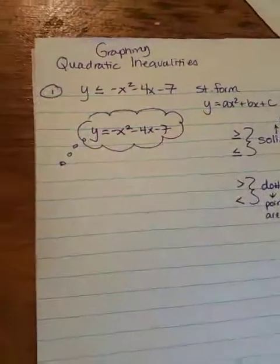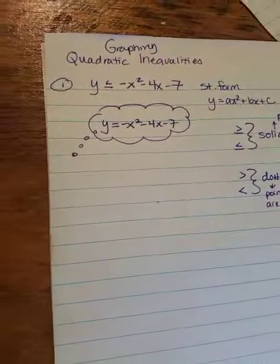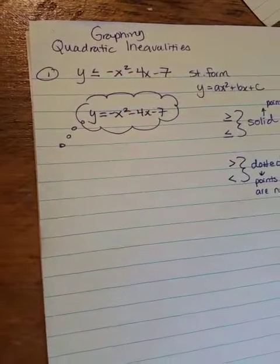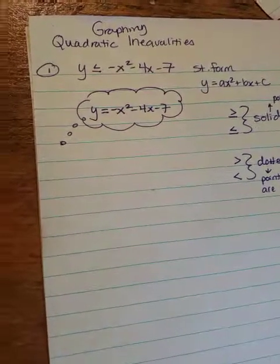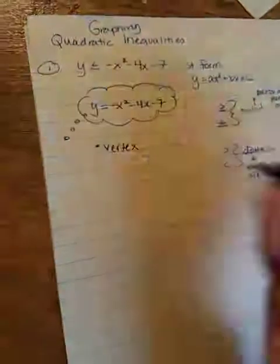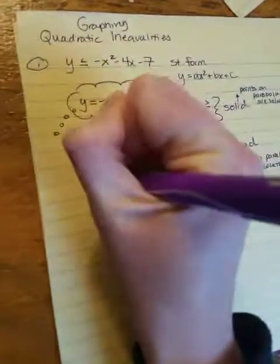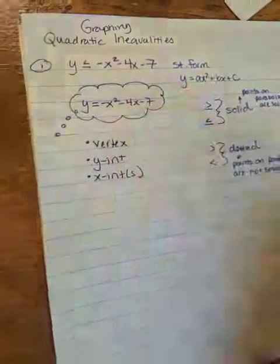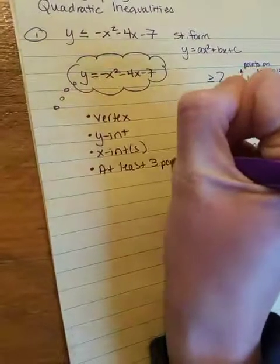So you're going to be happy because for these types of problems, you don't have to go through and list the domain, the range, the min, the max. Does it open up or down? The things I want you to include on your graph are the vertex. And if possible, I want you to include the y-intercept, if it fits. And if possible, the x-intercepts. And for these types of graphs, I want you to have at least three points, three ordered pairs on your graph.